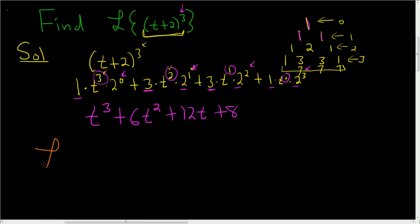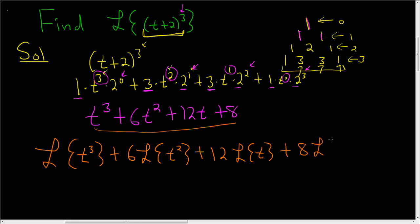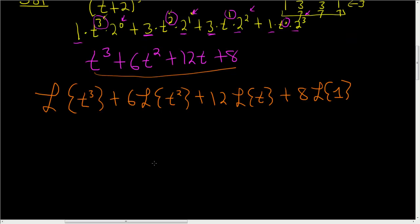So the Laplace of this thing is going to be the Laplace of t cubed. Let's just skip some steps here. Plus 6 times the Laplace of t squared, plus 12 times the Laplace of t, plus 8 times the Laplace of 1. Do you have to show all this work? I mean, you can even skip more steps. I don't know, it's up to you, I guess.